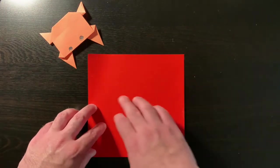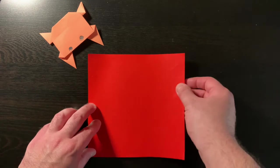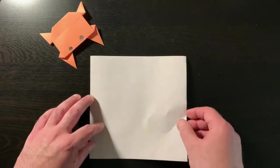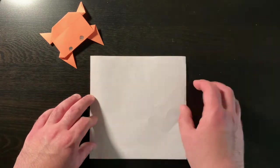To get started, we'll take our paper. This is colored on one side, white on the other. We're going to start with the white side up, so put the color facing your tabletop.